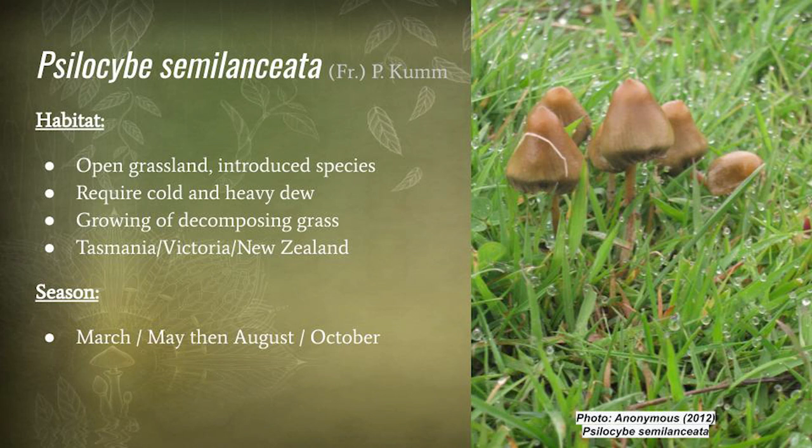Psilocybe semilanceata grows in open grassland. It's an introduced species associated with cattle, horses, and other animals that occur within pastures. It requires a little bit of cold and heavy dew to start fruiting, and grows on decomposing grass. It is found in Tasmania, Victoria, New Zealand, and New South Wales. Its season is between March to May and then August to October — it's usually too cold, moist, and frosty to survive during the intermediate winter period.